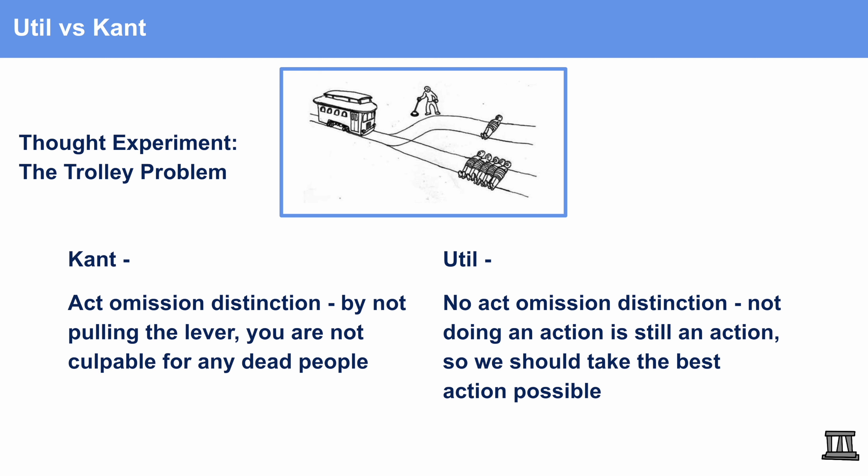On the other hand, utilitarianism says you should maximize the most amount of pleasure. Since five people are going to die if he does nothing, utilitarianism would pull the lever, because five people dying is worse than one person dying. The no act-omission distinction says that not doing an action is still an action, so we should take the best action possible. Thank you for watching this video, and I hope you learned the basic understanding of Kant and util and how they interact with each other.